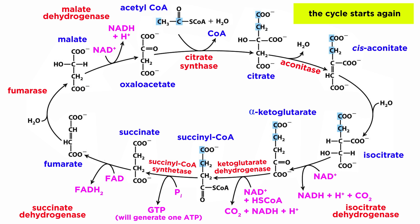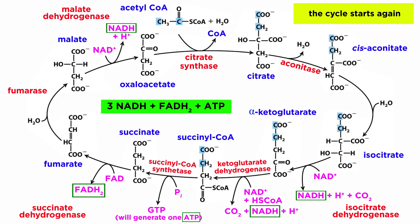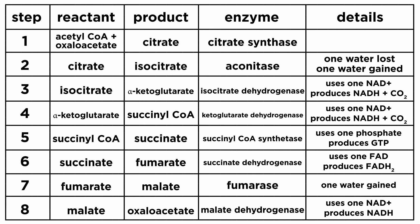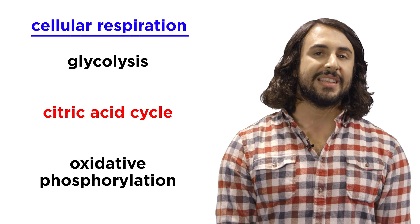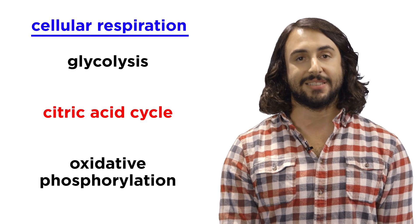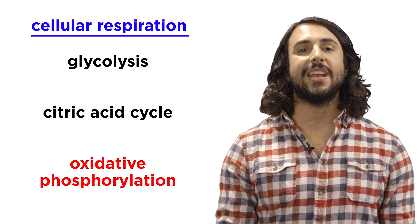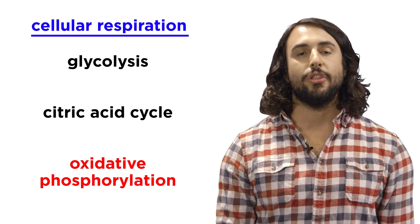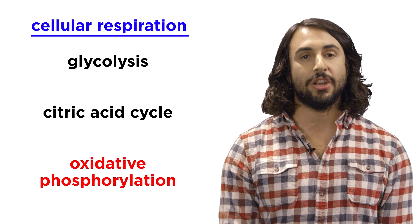Overall, for every acetyl-CoA that enters, this cycle will produce three NADHs, one FADH2, and one ATP. Since one glucose will produce two pyruvates in glycolysis, and therefore two acetyl-CoAs, we can double these numbers to get the amounts per glucose molecule. Here is a list of each step of the citric acid cycle with the names of the respective enzymes. We can see that there still hasn't been a huge payoff in terms of energy, but the products of the citric acid cycle will then move on to oxidative phosphorylation, which will generate the majority of the ATP produced in aerobic respiration.